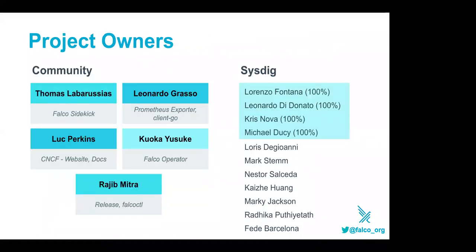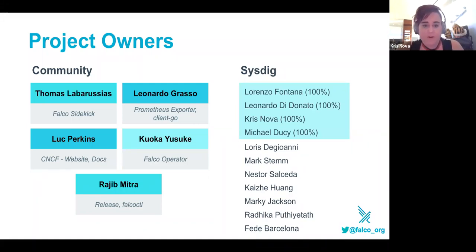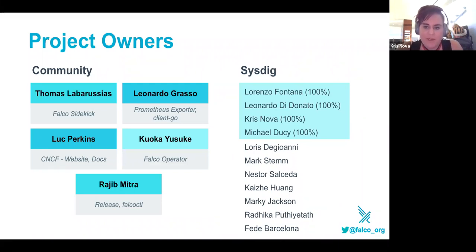On the community side, we want to give a huge shout-out to five particular community members who have stepped up and taken complete ownership of sub-projects in the Falco ecosystem: Thomas, probably the most active non-Sysdig maintainer; Leonardo Grasso, who published the Prometheus exporter; Luke Perkins, Yokasha, and Rajib, who have taken ownership of various ecosystem projects. The core Falco team sponsored by Sysdig includes myself, Michael Ducie, Leonardo, Lorenzo, and Loris Dioshani. We also want to highlight Mark Stem for all his work bringing Falco to where it is today.